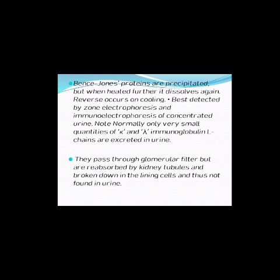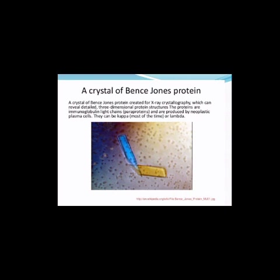These light chains pass through the glomerular filtrate but are normally reabsorbed by the kidney tubules back into circulation. Only a small amount is excreted in the urine, where they may be broken down by the lining cells. This slide shows a three-dimensional structure of Bence Jones proteins produced by X-ray crystallography.